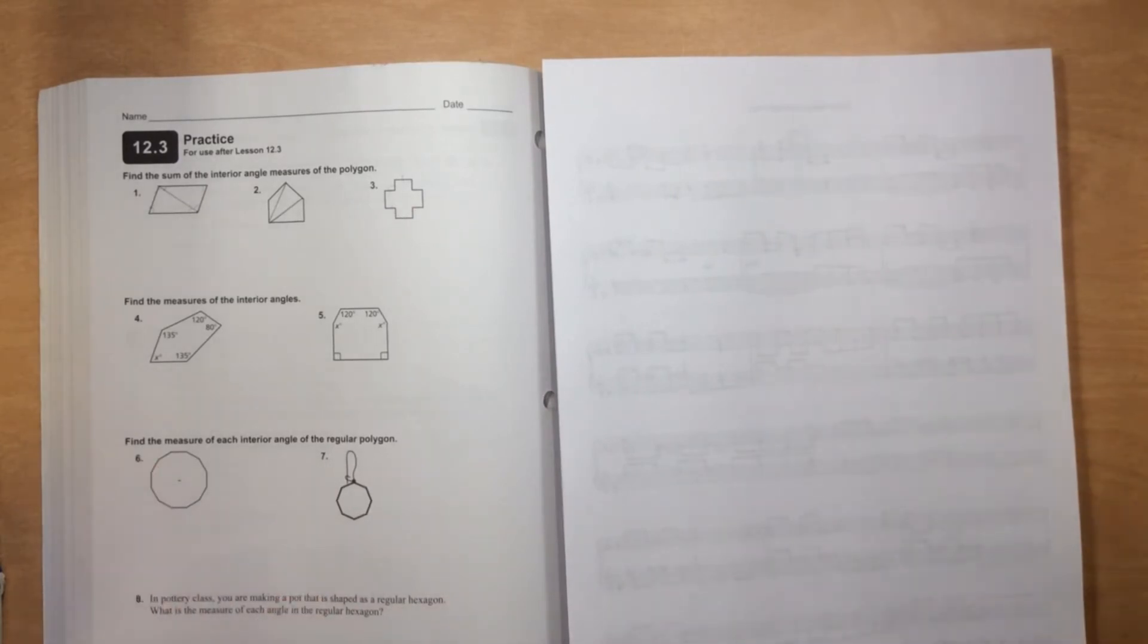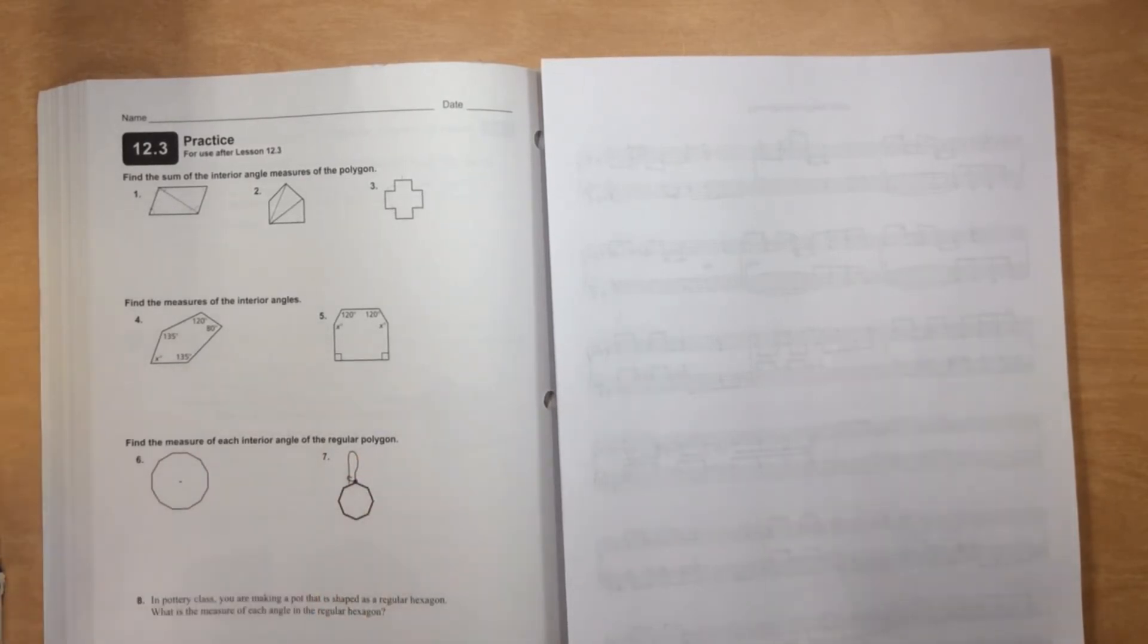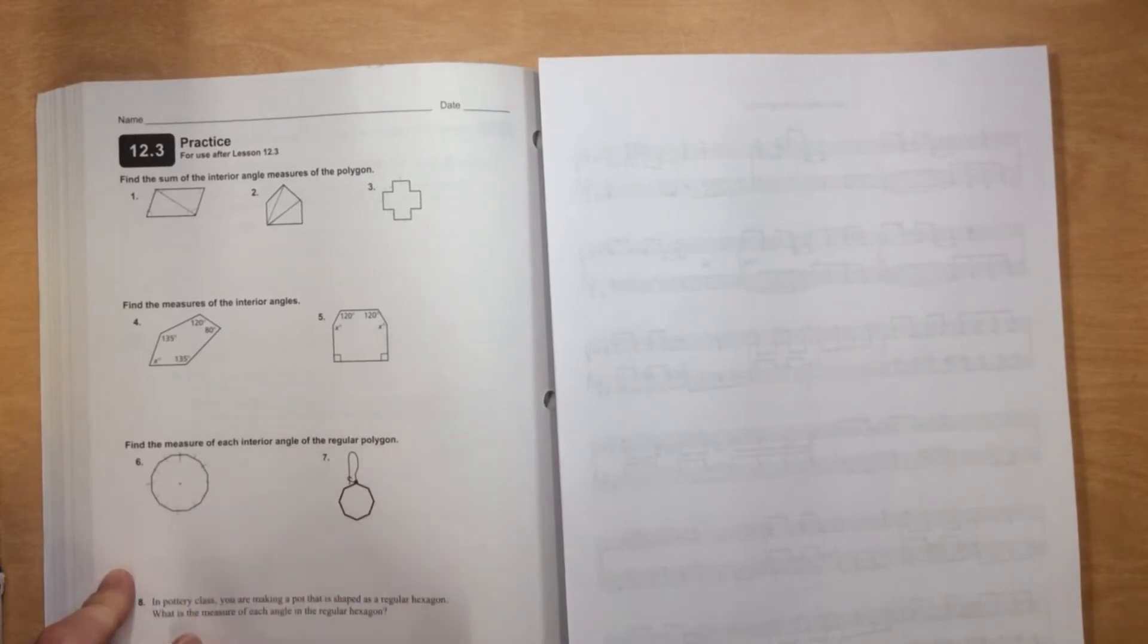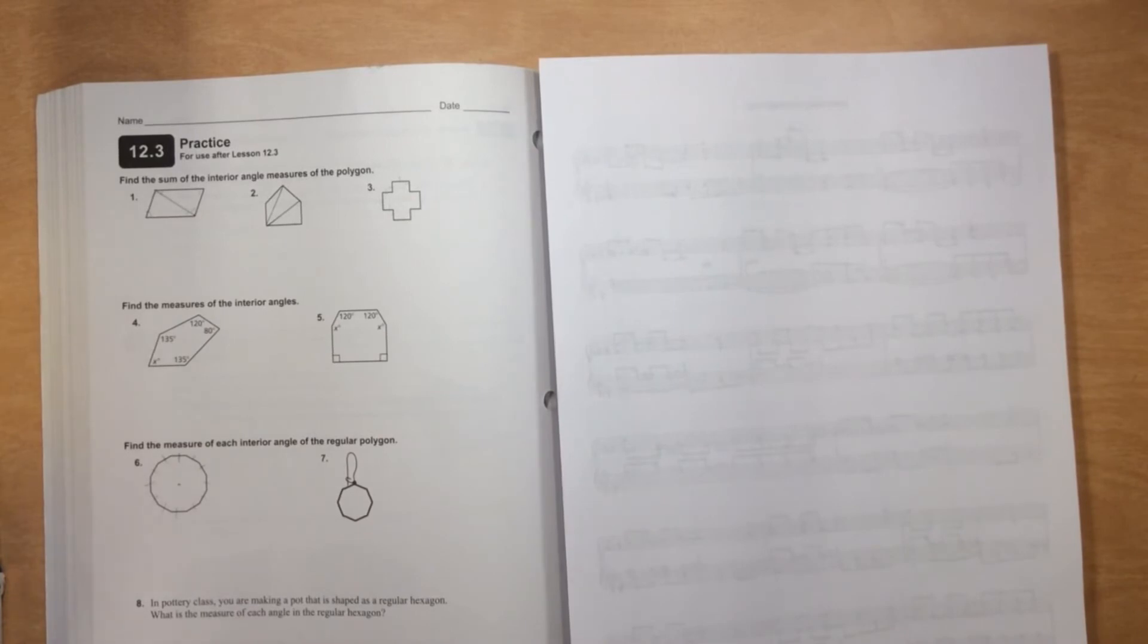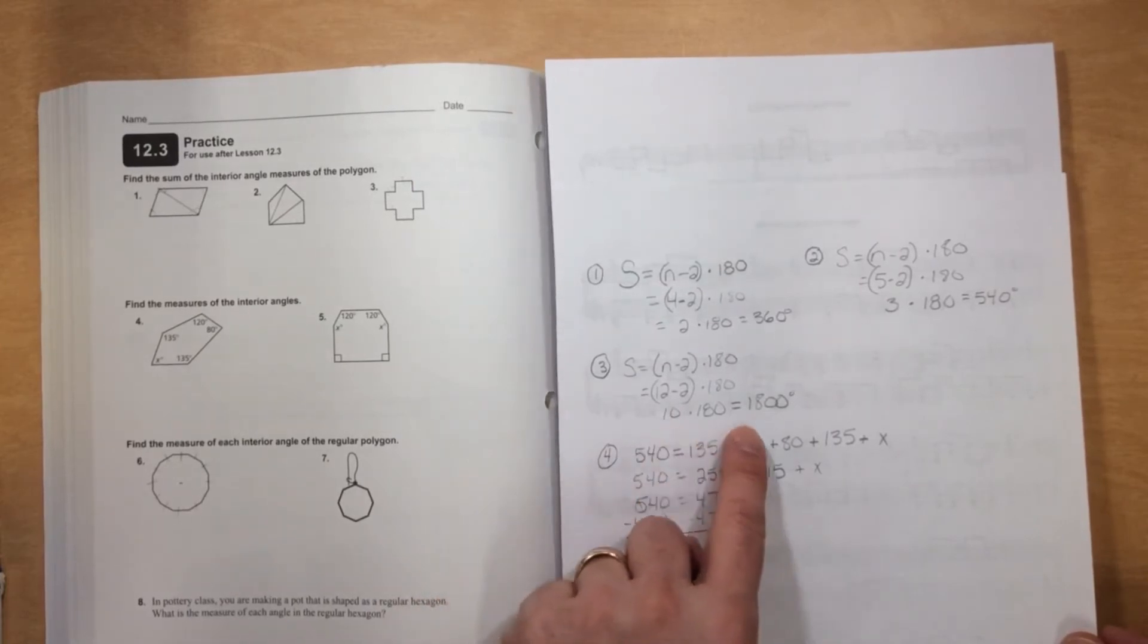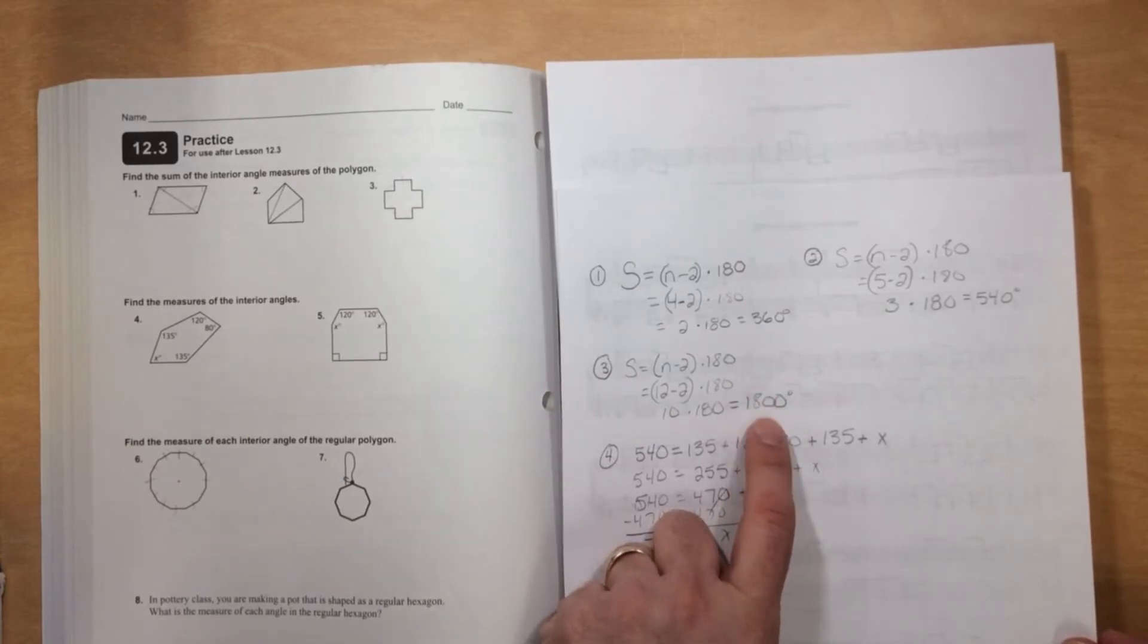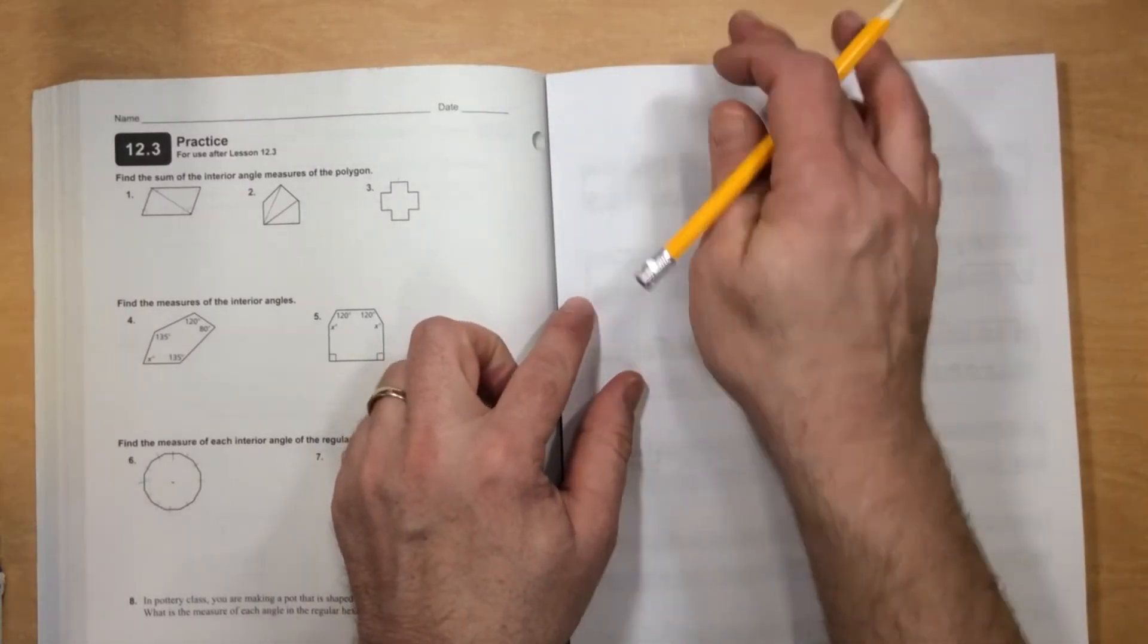Number 6, it says find the measure of each interior angle of the regular polygon. So I'll start with the top here: 1, 2, 3, 4, 5, 6, 7, 8, 9, 10, 11, 12, a 12-sided shape. Now if I go all the way back to number 3, we found that a 12-sided shape has 1,800 degrees. That's the sum of the angles. So I'm not going to figure that out again.